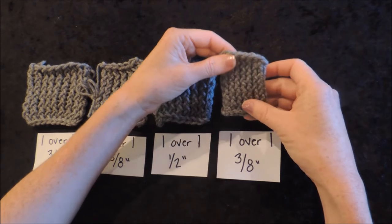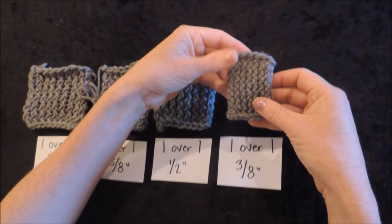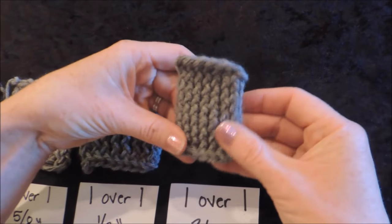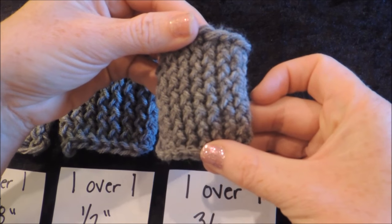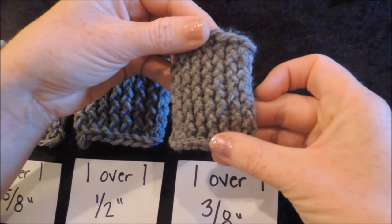Now our three-eighths inch gives you the tightest weave with one strand of worsted weight. There's basically no air in between those. So that's going to give you a really nice solid stitch.